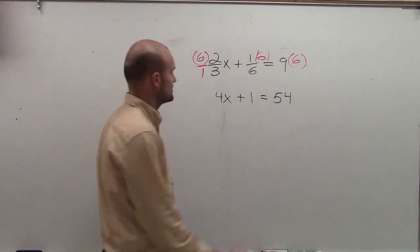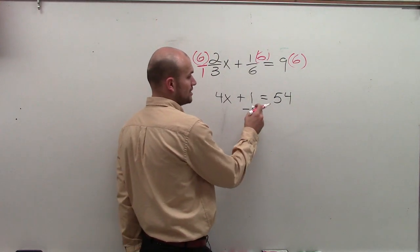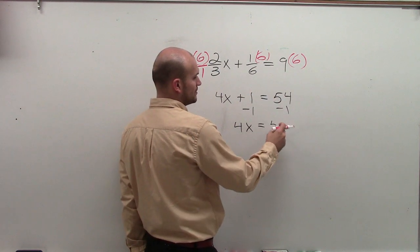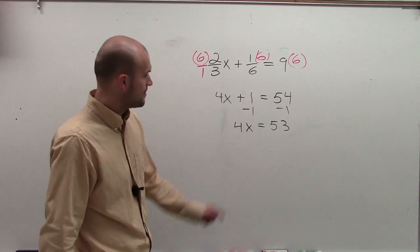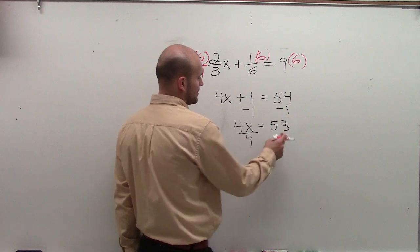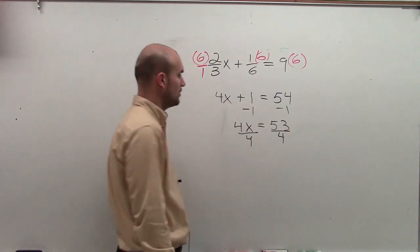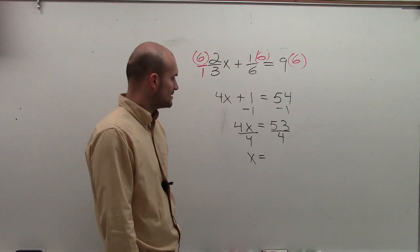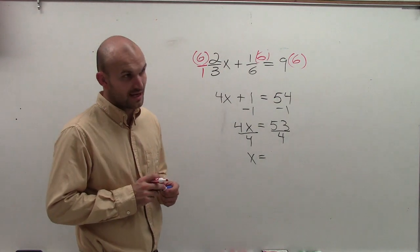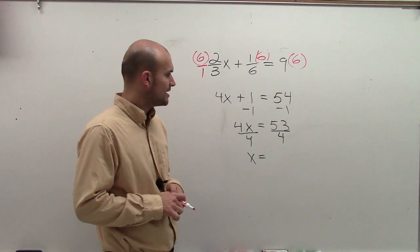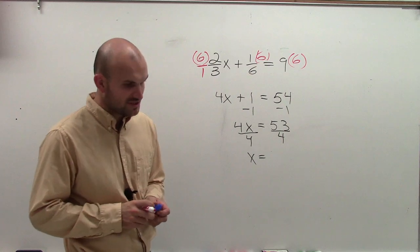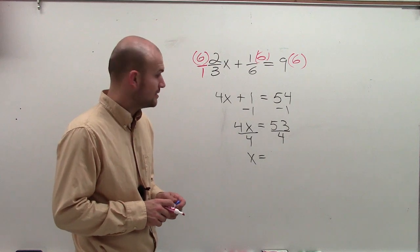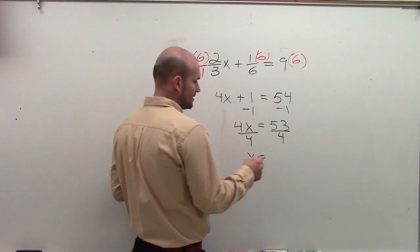So now let's just solve. It's a two-step equation. First, always undo addition and subtraction first. So I have 4x = 54 minus 1, which is 53. Now I need to divide by 4 — division property of equality. Make sure you do it on both sides. 4 goes into 40 ten times, and into 52 an extra 4 more times, so we get 13 with a remainder of 1.